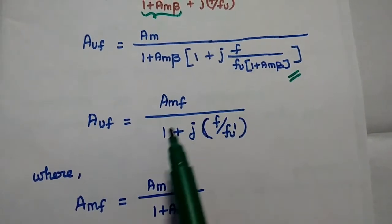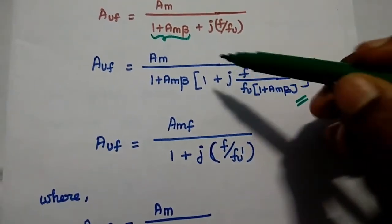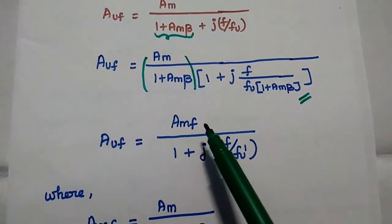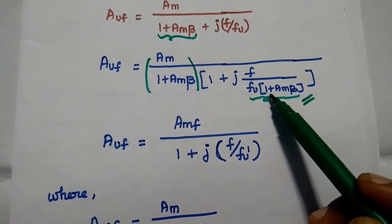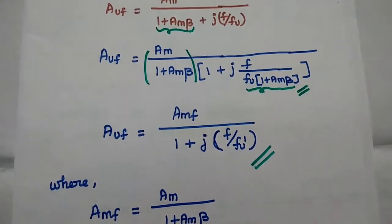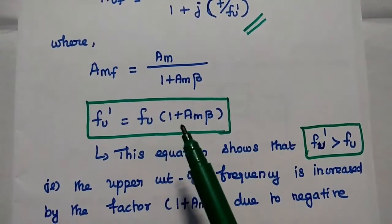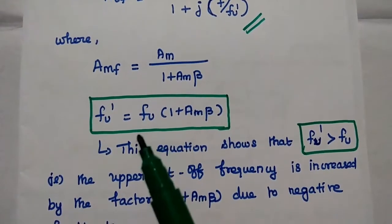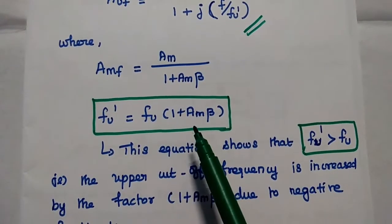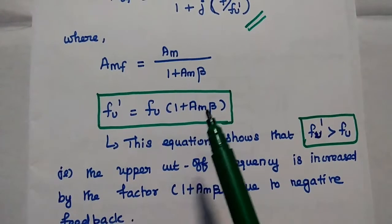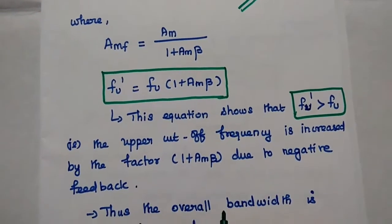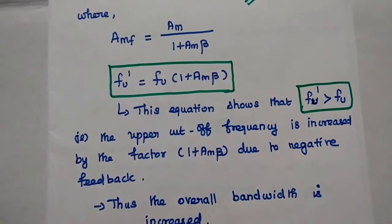This expression is written as AUF = AMF / (1 + j·F/FU_dash), where AMF is the midband gain with feedback and FU_dash = FU × (1 + AM·β). From this equation, FU_dash, the upper cutoff frequency with feedback, is always greater than FU — it is increased by the factor (1 + AM·β). Thus, the overall bandwidth is increased.